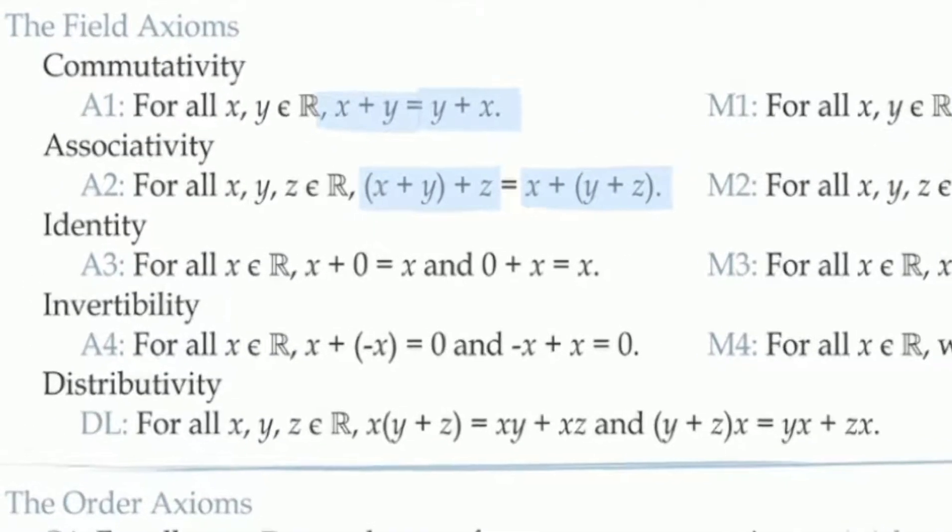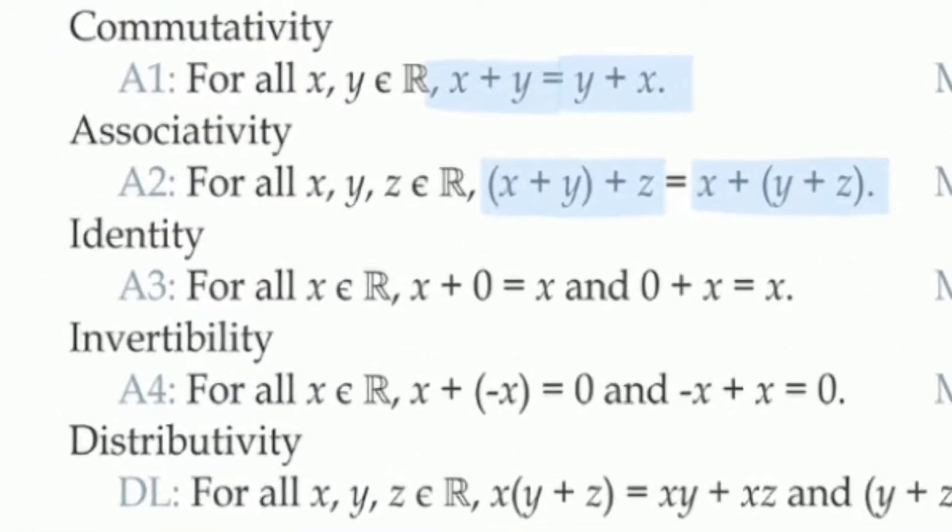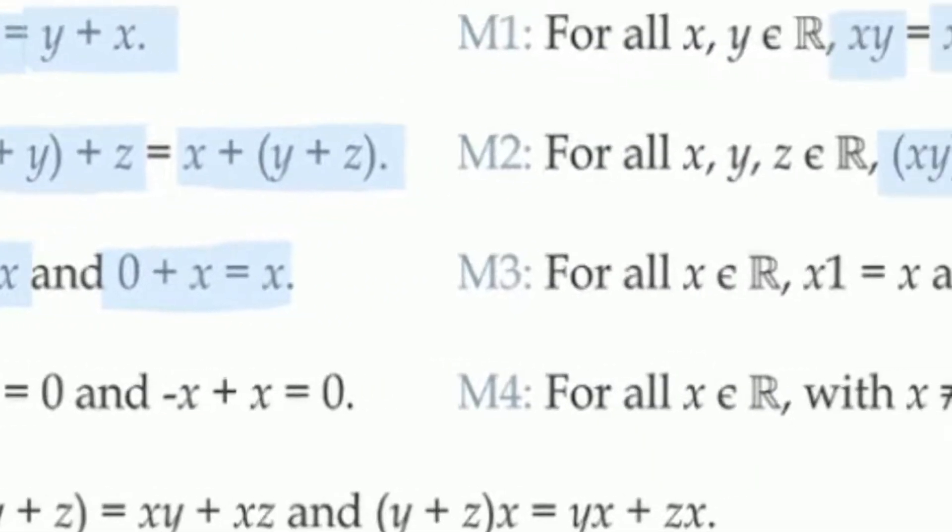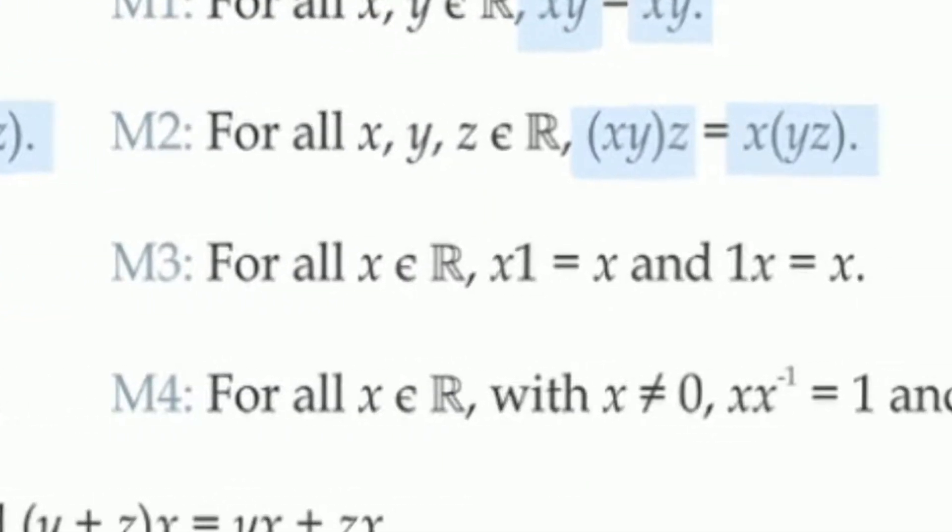A3 tells us that the number 0 is the additive identity. What this means is if we add any number to 0, it just returns that number. And axiom M3 tells us the same thing about multiplication and the number 1. The number 1 is what's called the multiplicative identity, meaning that if we multiply any number x by 1, it just returns the number x.